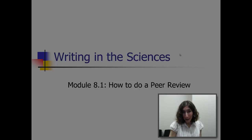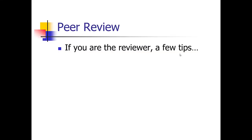In this first module I'm going to talk about how to do a peer review. A couple weeks ago we talked about participating in peer review on the other side as an author. Today I'm going to give you a few tips about what to do if you are the peer reviewer. After you get a paper or two published in the literature, particularly if you're a first author, very soon after that you may get asked to do peer review.